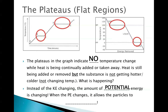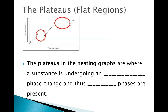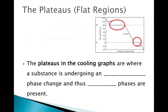When the potential energy changes, it allows the particles to rearrange. They're not moving faster or slower because temperature is staying the same. However, the particles are rearranging because we have a phase change occurring. The plateaus in the heating graphs is where a substance is undergoing an endothermic phase change, where they're absorbing energy, and two phases are always present. The plateaus in the cooling graphs are where they're undergoing an exothermic phase change, releasing heat, and again two phases must be present.